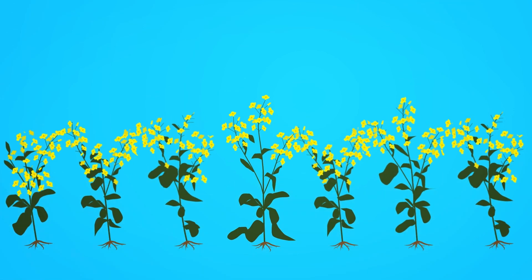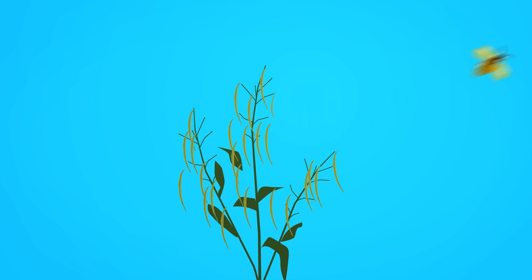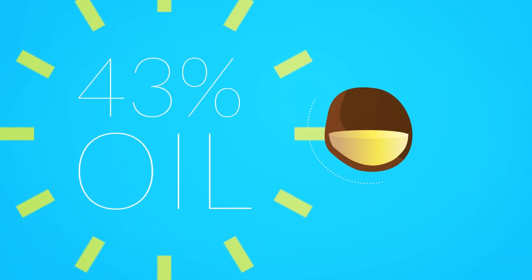By harvest time, the flowers have been pollinated, formed pods, and filled up each tiny canola seed with up to 43% canola oil. That's a really efficient crop.